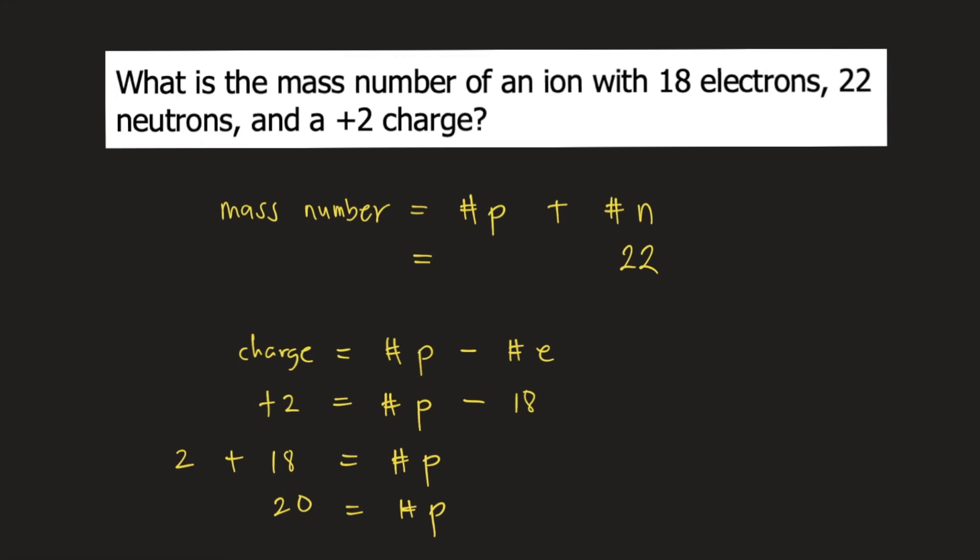So you have 20 protons. Now you know the number of protons, you can substitute this into the equation for mass number. So 20 protons plus 22 neutrons.